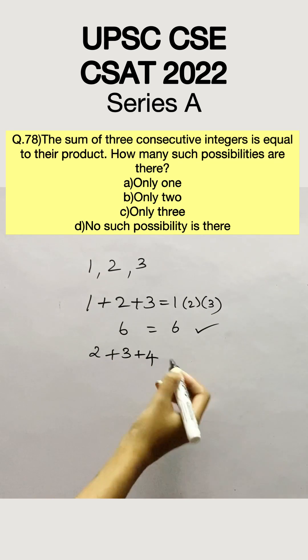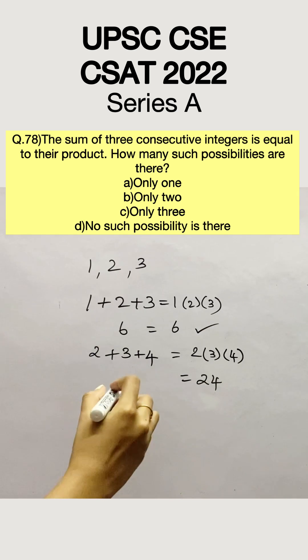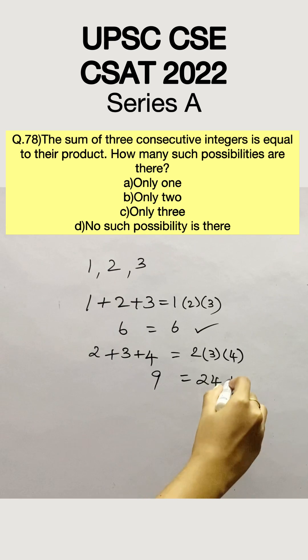Let's check for 2, 3 and 4. 2 plus 3 plus 4 and 2 into 3 into 4. Now 2, 3's are 6, 6, 4's are 24. But 2 plus 3 plus 4 will give us 9. So 24 is a lot higher than 9. So this will be the pattern when you increase the numbers as well.